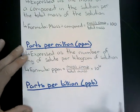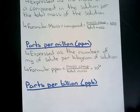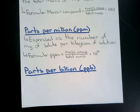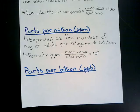Parts per billion is expressed as the number of micrograms of solute per kilogram of solution, and has the same formula structure as ppm but multiplied by 10 to the 9th power.